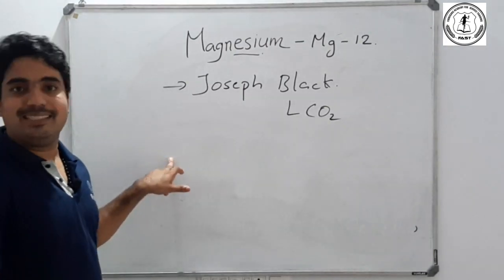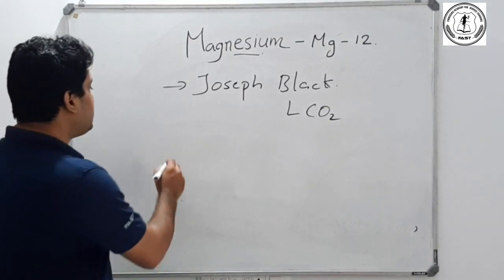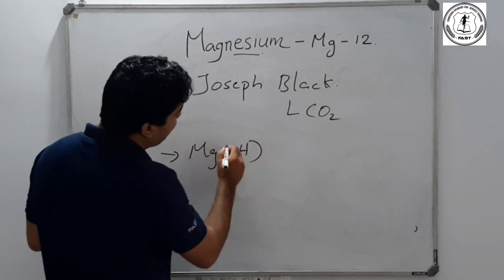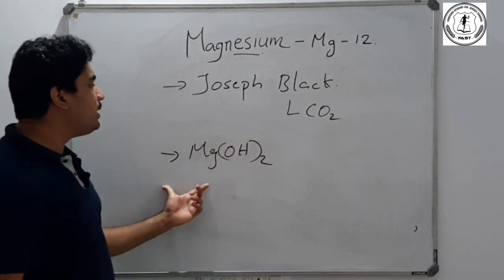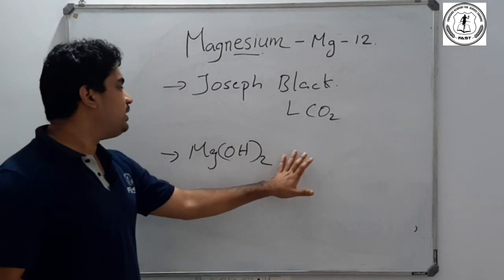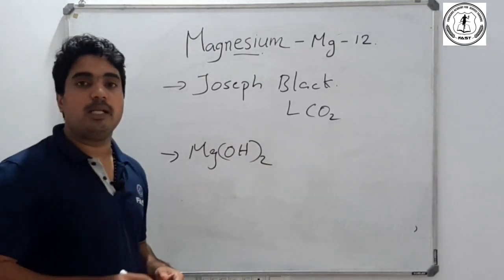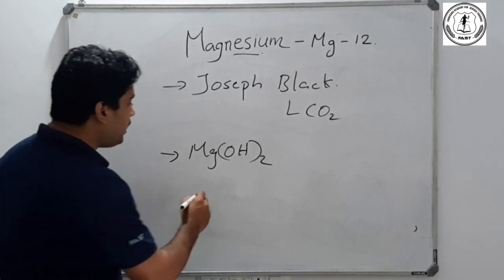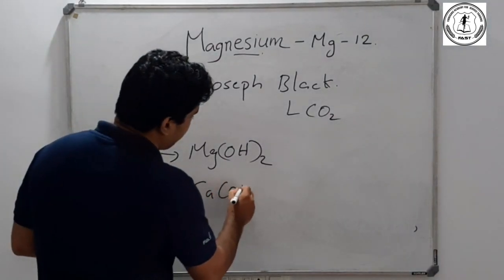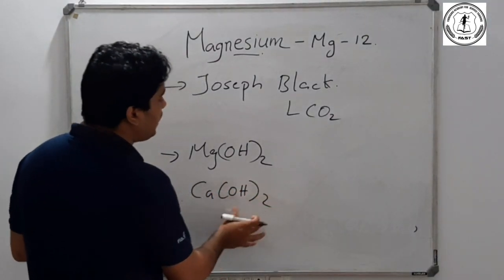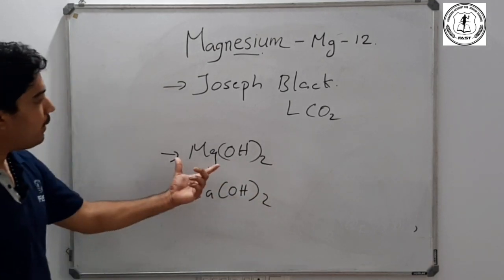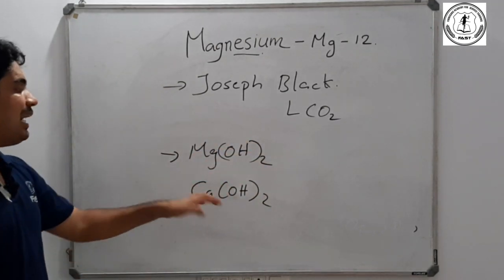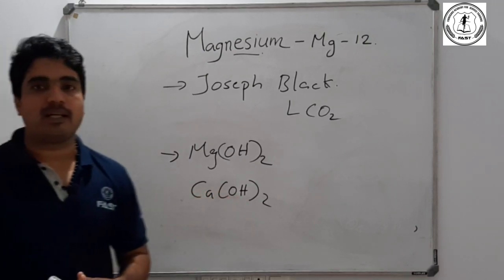Milk of Magnesium is magnesium hydroxide. We are going to compare it with milk of lime — milk of lime is calcium hydroxide. So milk of Magnesium is magnesium hydroxide, and milk of lime is calcium hydroxide.